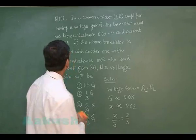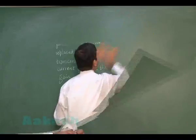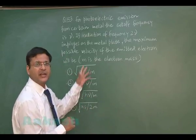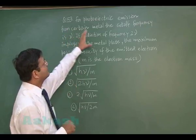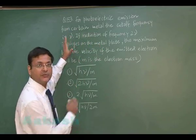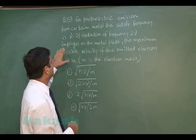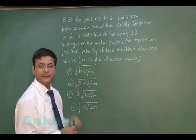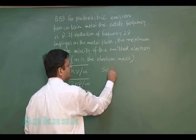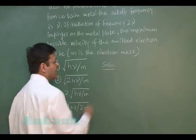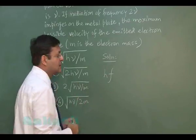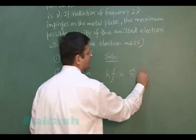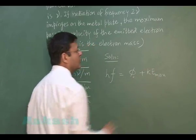Question 153 is based on dual nature of radiation and matter — specifically the photoelectric effect. It says that for photoelectric emission from a certain metal, the cutoff frequency is ν. If radiation of frequency 2ν is incident on the metal plate, the maximum possible velocity of the emitted electron is demanded.